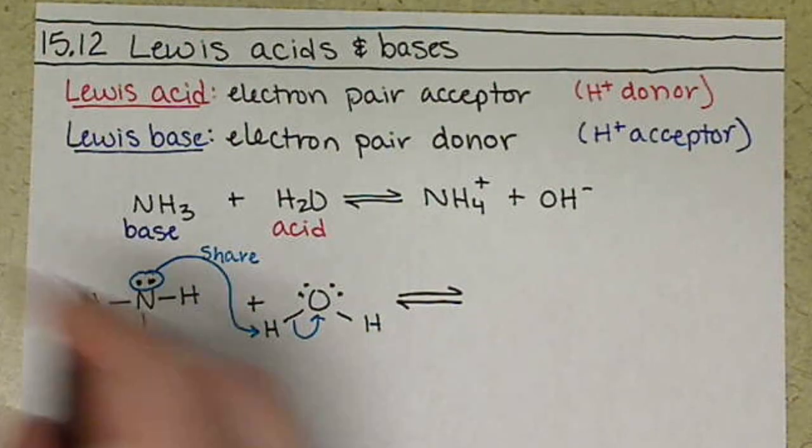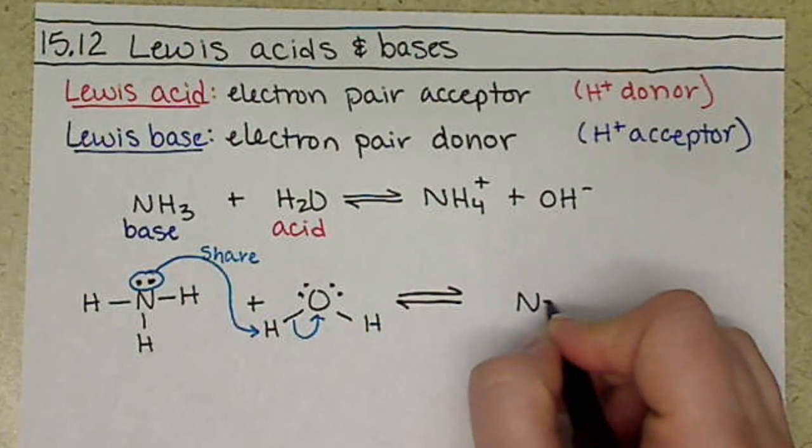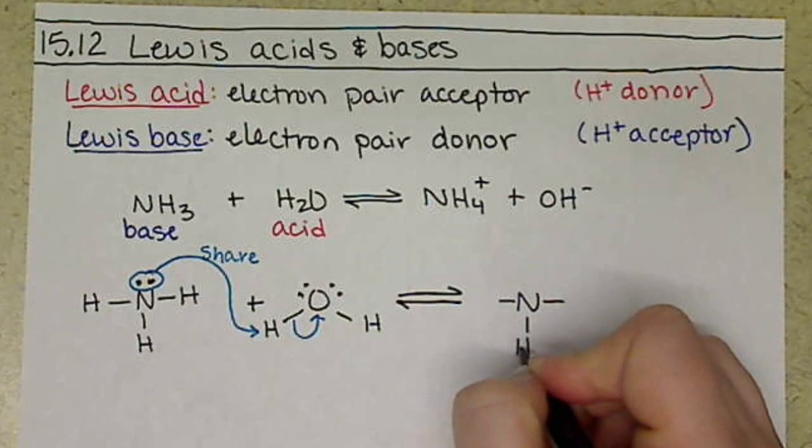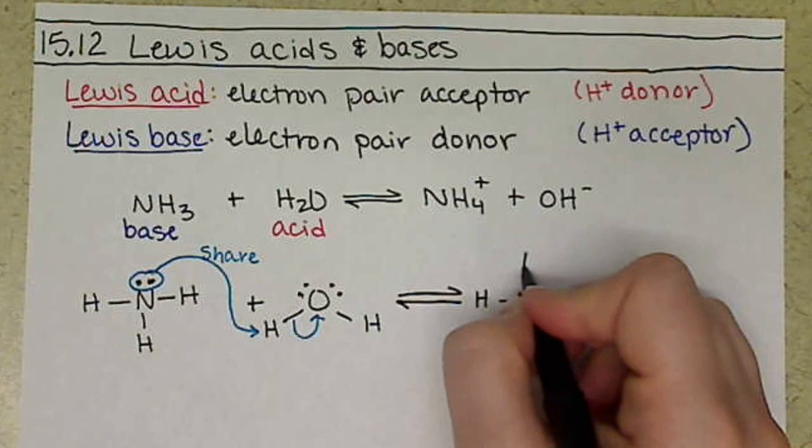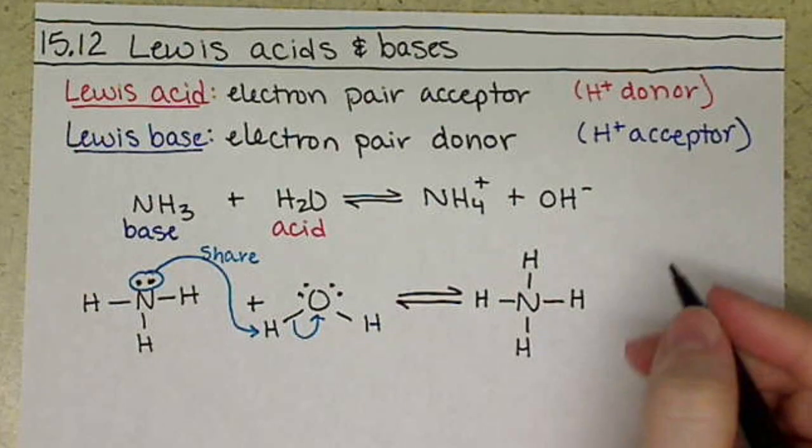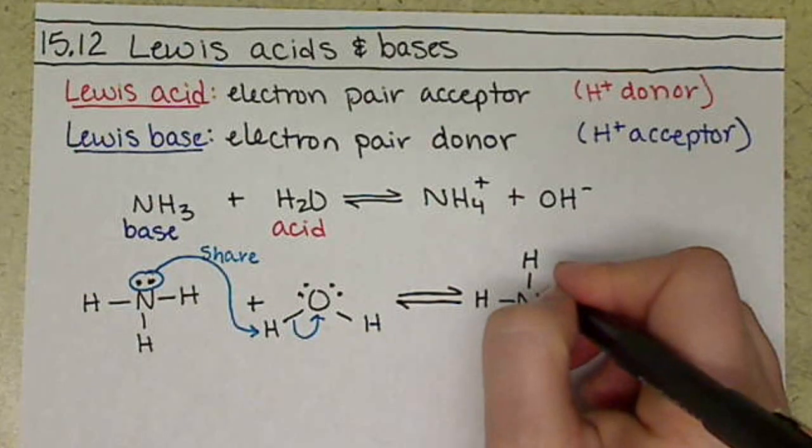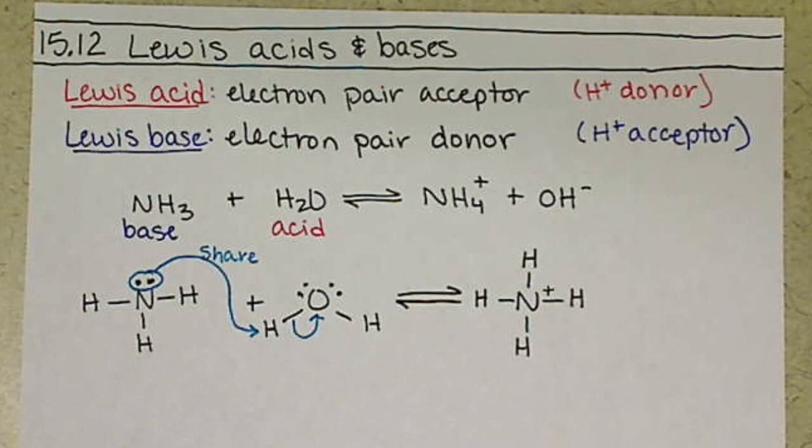So our nitrogen here is going to have four hydrogens. These are the three original hydrogens, plus the fourth, which is going to give that nitrogen a formal charge of plus one.